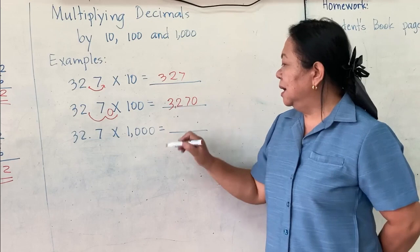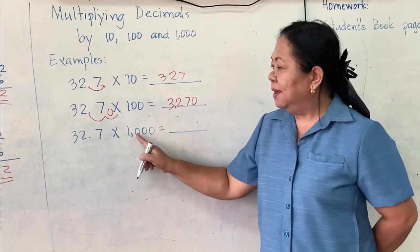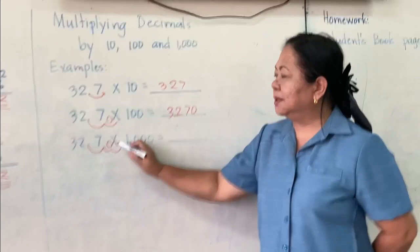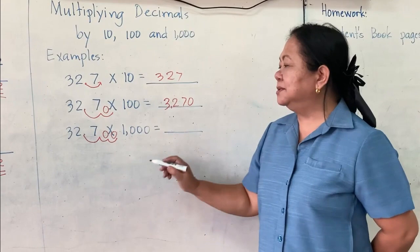Then, the multiplier is 1,000. The decimal point is there and there are three zeros, so we will move the decimal point 3 times to the right: 1, 2, 3. There are two places that don't have numbers, so we just write 0. Therefore, the answer is 32,700.